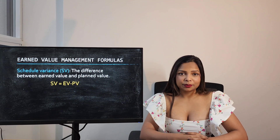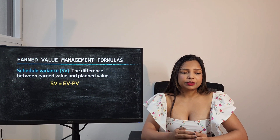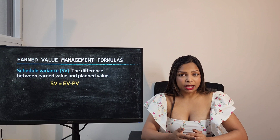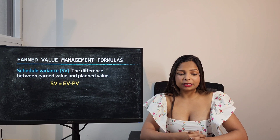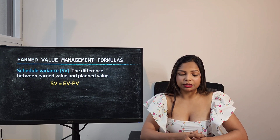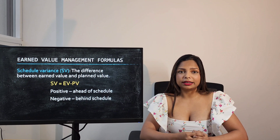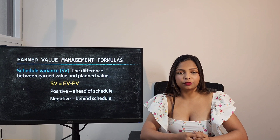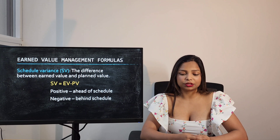Schedule Variance is the difference between Earned Value and Planned Value. The formula to calculate Schedule Variance is EV minus PV. If Schedule Variance is a positive number it means your project is ahead of schedule, but if it's negative it means the project is behind schedule.